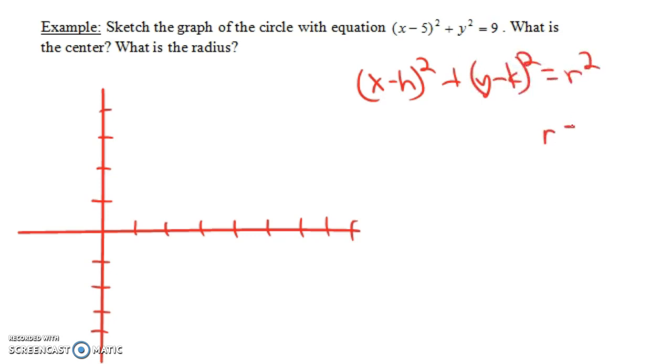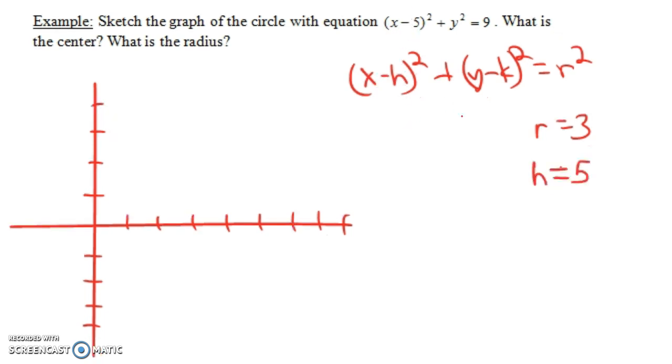Now notice the r would have to be 3, because 3² = 9. Now if you had something other than 9 there, 9 is a nice number because it's a perfect square, but if it were something like 17 there instead of 9, r would be the square root of 17. Just like r here is the square root of 9, which is 3. Now the h you can see corresponds to the 5 and notice x - 5. We have x - h, so h is 5. And the k is going to be 0 because y - 0 is the same thing as y. So it's just y² or that's (y - 0)². So the k is going to be 0.